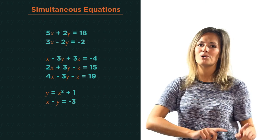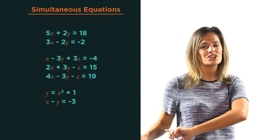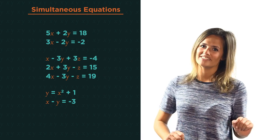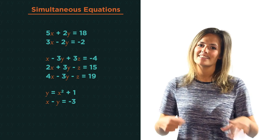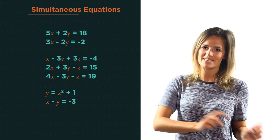In this video we're going to discover what simultaneous equations are and how to solve them. Simultaneous equations are two or more equations with two or more unknowns. They're called simultaneous because they need to be solved at the exact same time.